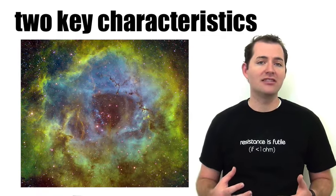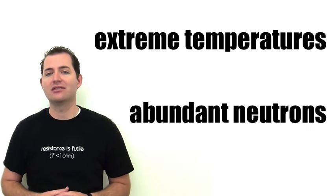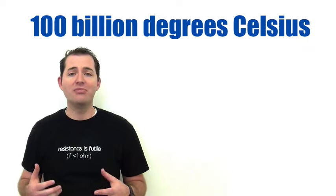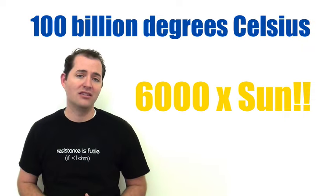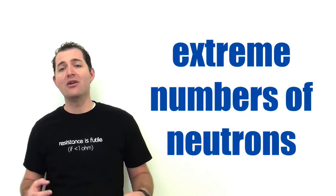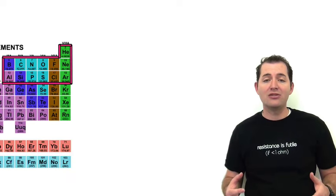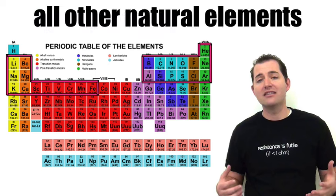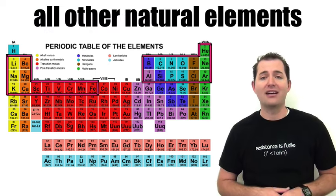During a supernova explosion, there are two key characteristics that allow for elements heavier than iron to be made, and these two characteristics don't exist anywhere else: extremely hot temperatures and an abundant number of neutrons. Supernova stars can reach temperatures of 100 billion degrees Celsius — 6,000 times hotter than the core of our sun. These extreme neutron numbers allow elements heavier than iron to be created, accounting for all of the other heavier natural elements we find on our periodic table.